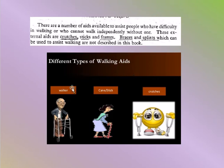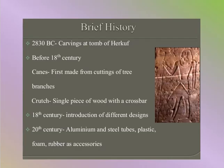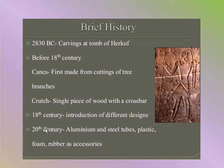Basically there are three types of walking aids discussed in this lecture: crutches, sticks, and frames. Brief history: 2830 BC carvings at the tomb of Harcock. Before the 18th century, canes were first made from cuttings of tree branches, then from a single piece of wood with a crossbar. In the 18th century, different designs were introduced. In the 20th century, aluminium and steel tubes with plastic, foam, and rubber accessories were used.